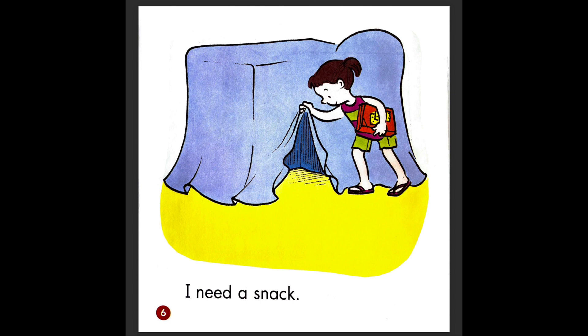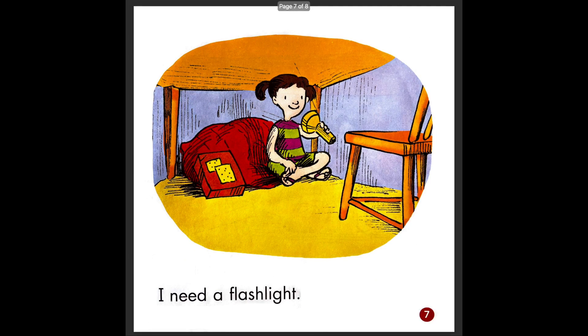I need a snack. Can you find her snack? Where is her snack? It's in the red box — she's holding a red box. I need a flashlight. Can you find the flashlight? There it is. And what color is it? It's yellow. So she has a yellow flashlight, a red pillow, and her snacks are in a red box.